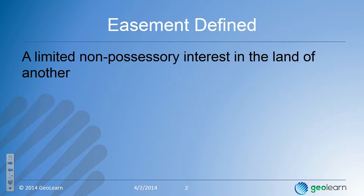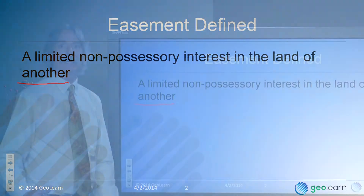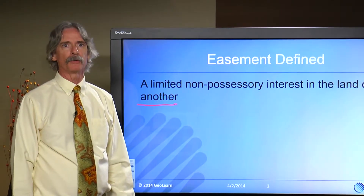First of all, easements are an interest in real estate — this is a key point, as we will find out as we go later. However, it is a non-possessory interest; it is not a fee interest. It's limited, and the interest is limited by the terms of the document that created it, or by the manner in which the easement was created if it was an unwritten easement. And a very key point: it is in someone else's land. You cannot have an easement over yourself.